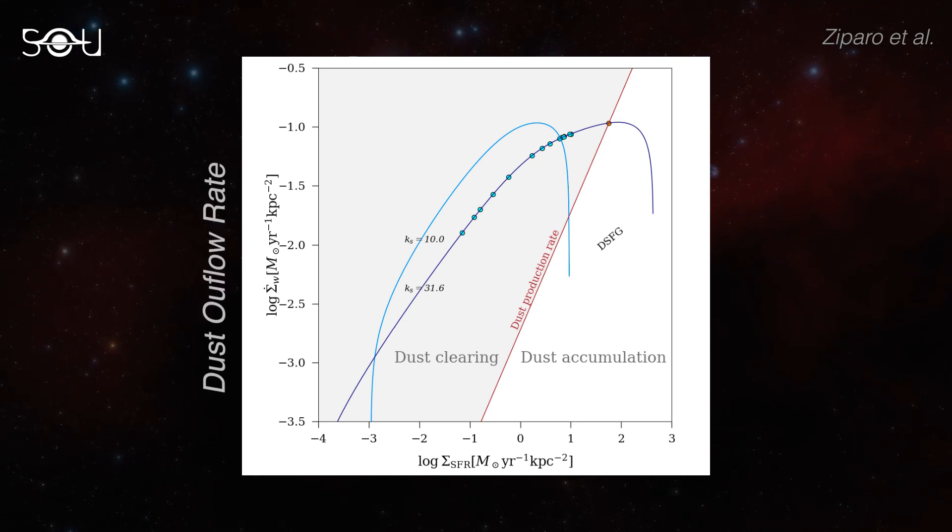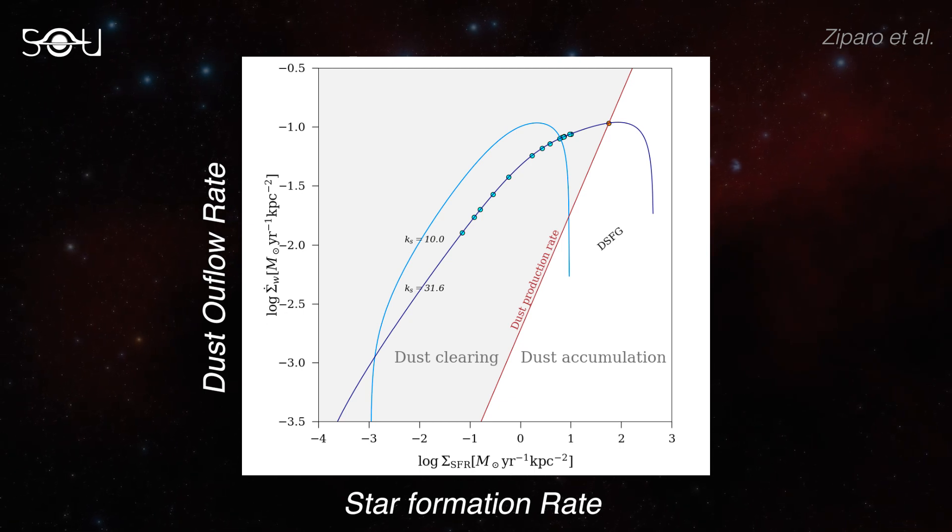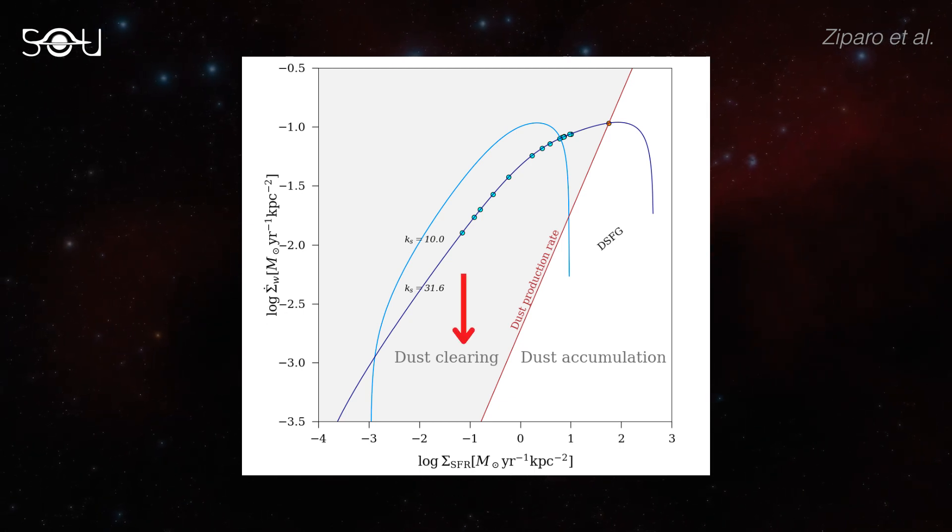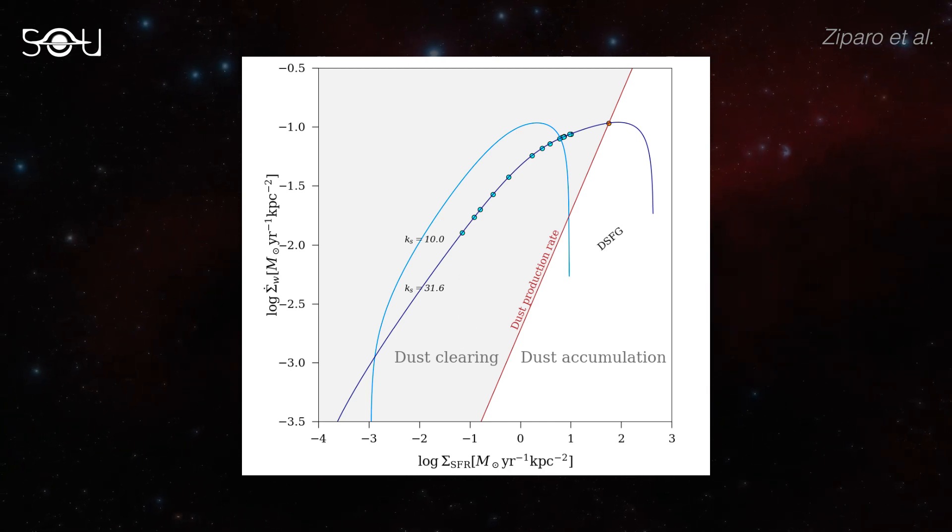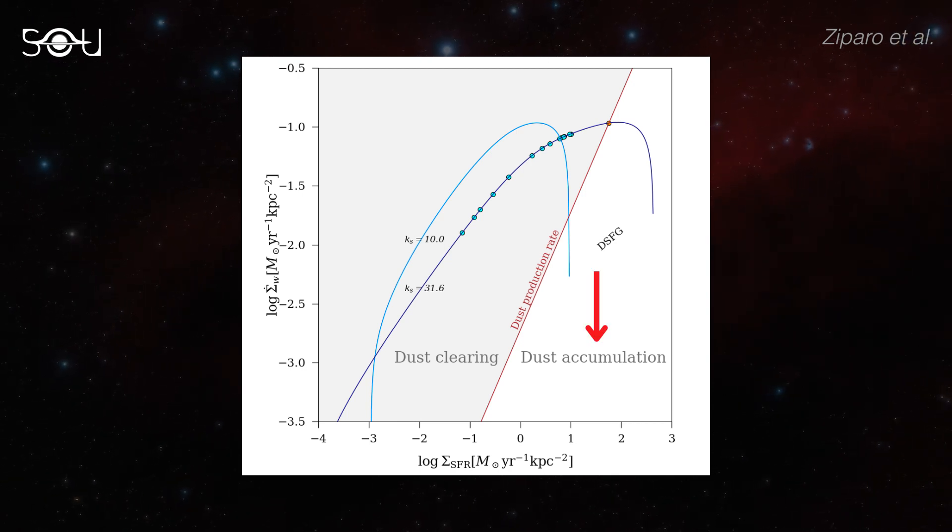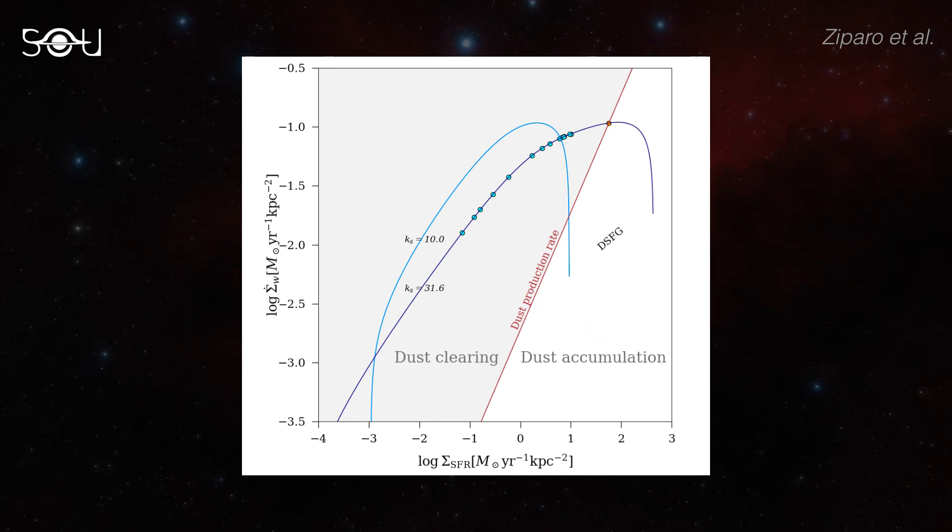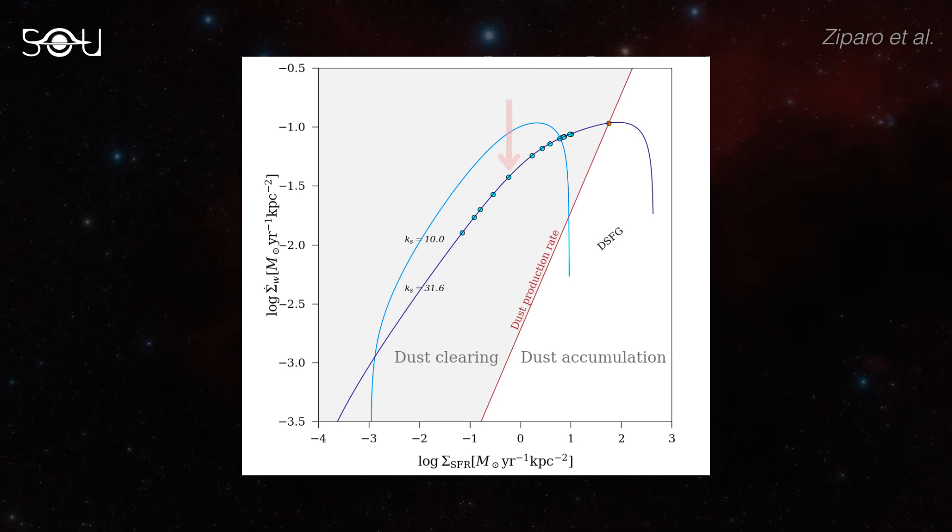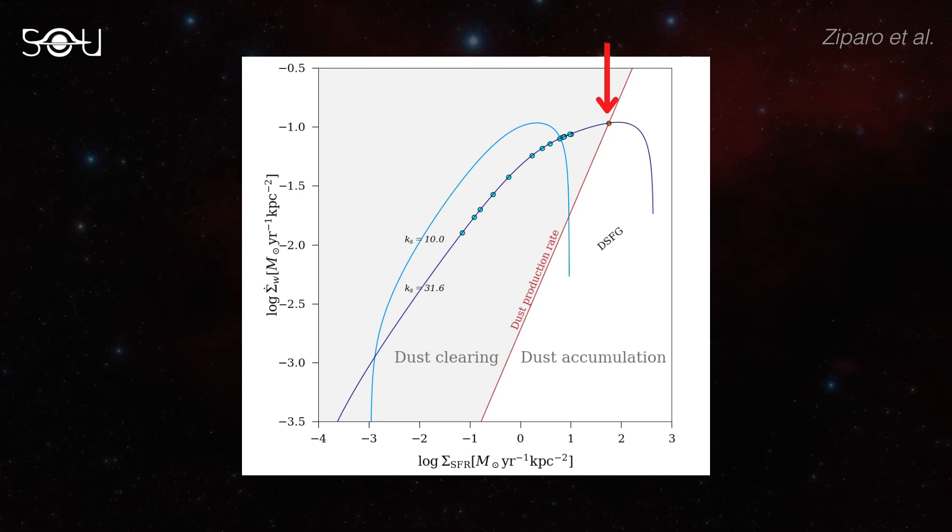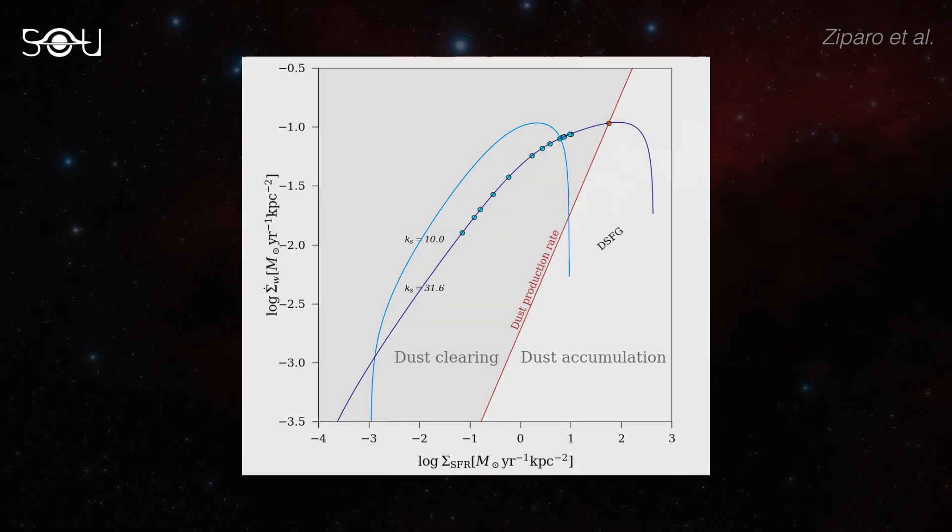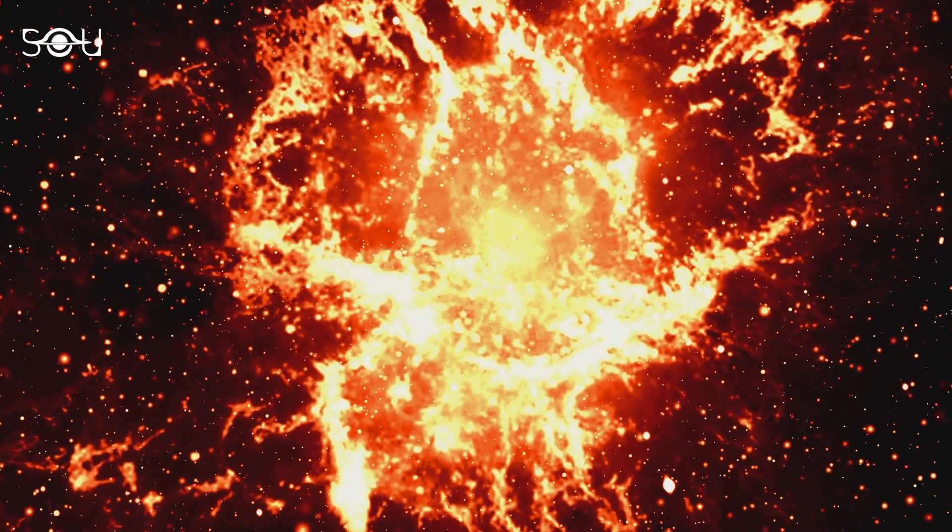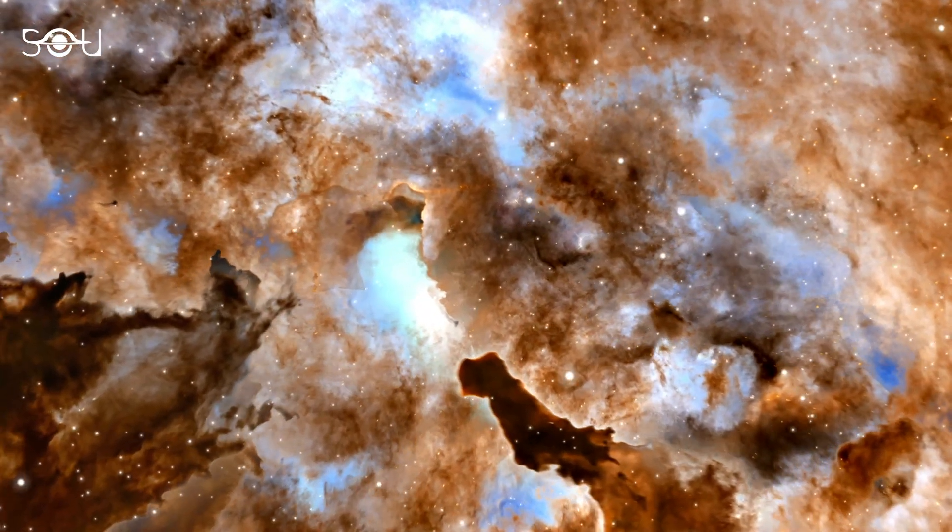This is an important figure from the research paper. It's a graph between the dust outflow rate and the disk star formation rate per unit area. When the curves are located in the dust clearing region, the dust ejection rate is faster than the production rate shown in red, and the galaxy is cleared. In the opposite case, or the white region, dust accumulates due to a slow ejection rate. The cyan points are almost dust-free galaxies discovered by Webb and lie in the dust clearing area. The orange point marks a heavily obscured galaxy found by Webb at a redshift of 12.1, which lies closer to the dust accumulation region. This means the galaxy has a high star formation rate and is producing dust at a rate faster than it's ejecting.